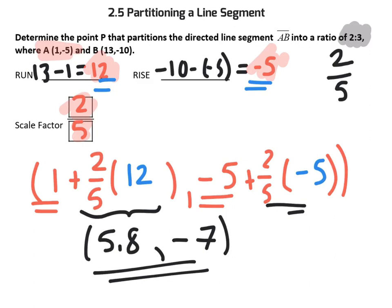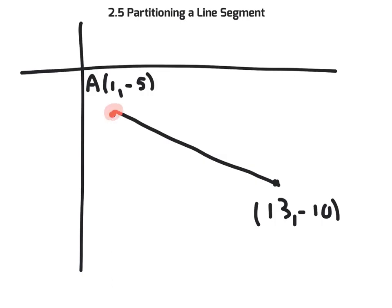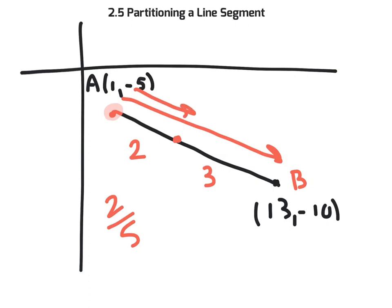This is the partitioning location to cut the segment into 2 and 3 parts. The center of the directed line segment is A, and point B is down here. We used a scale factor of 2 fifths, taking 2 fifths of the directed distance and landing at the point 5.8 to the right and negative 7 — exactly the location to partition it into two parts and then three parts. They won't always land on a nice integer, but that's the idea of partitioning.